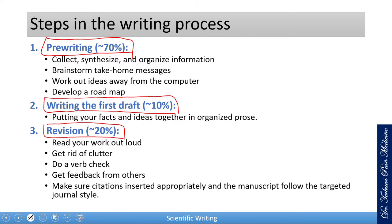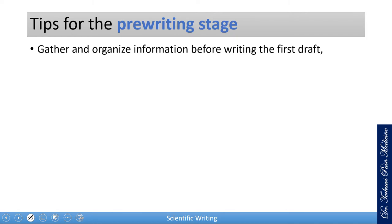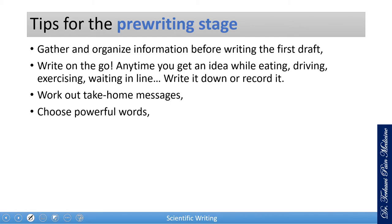Tips for the pre-writing stage: gather and organize information before writing the first draft. Write on the go — anytime you get an idea while eating, driving, etc., either write it down or record it, using your phone if needed. Work out take-home messages. Choose powerful words — you can keep a small bank of powerful words you like from other manuscripts to use as needed. When discussing a controversy, follow the arguments, counter-arguments, and rebuttals.